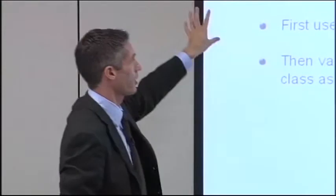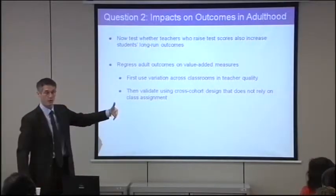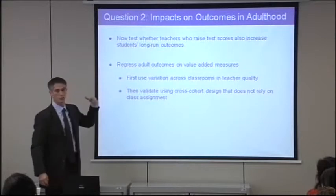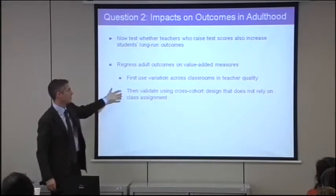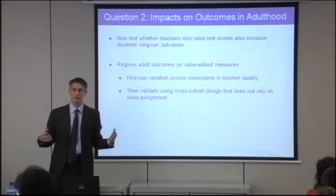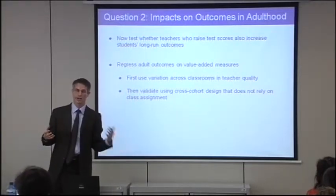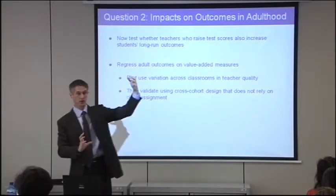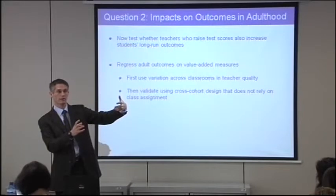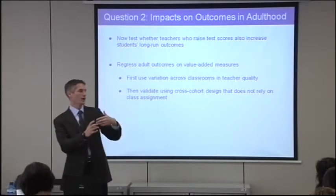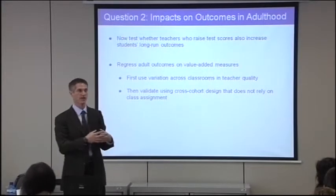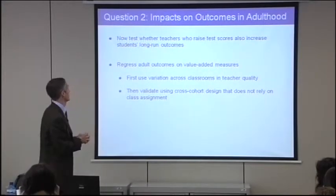So we're going to regress our adult outcomes on those value added measures. First, we're going to use the variation across classrooms in teacher quality, and then I'll show you we can use the cross-cohort design. I can ask: what's the difference in earnings across sequential cohorts of fifth graders that went through a school, and what's the difference in the value added of fifth grade teachers across cohorts in that school?